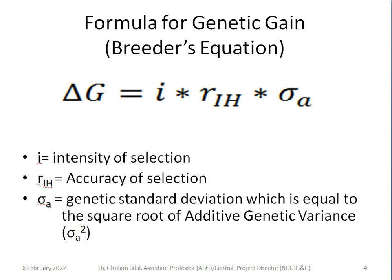This is the simple formula for genetic gain estimation, also called the breeder's equation. Delta G is the rate of genetic change. Genetic gain is equal to intensity I multiplied by r_IH multiplied by sigma_A. I stands for intensity of selection, r_IH stands for accuracy of selection, and sigma_A is the additive genetic standard deviation, which equals the square root of additive genetic variance sigma²_A.